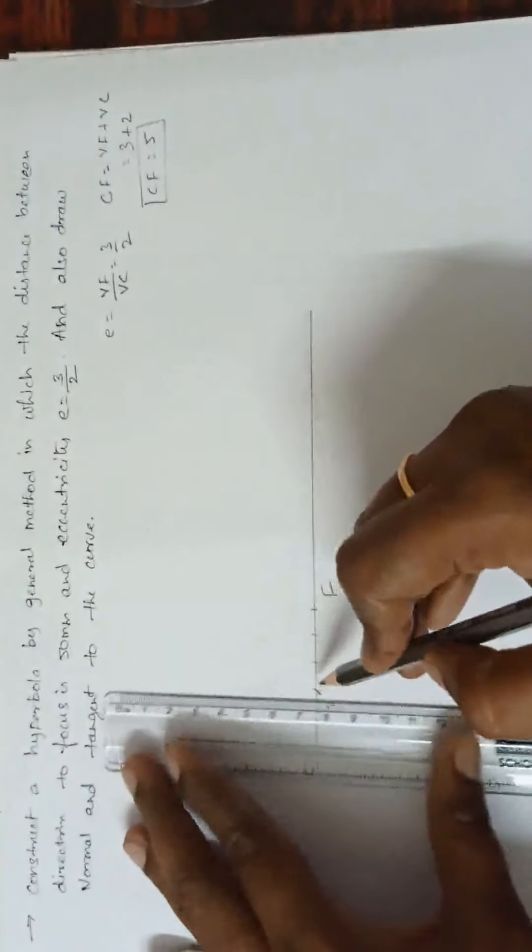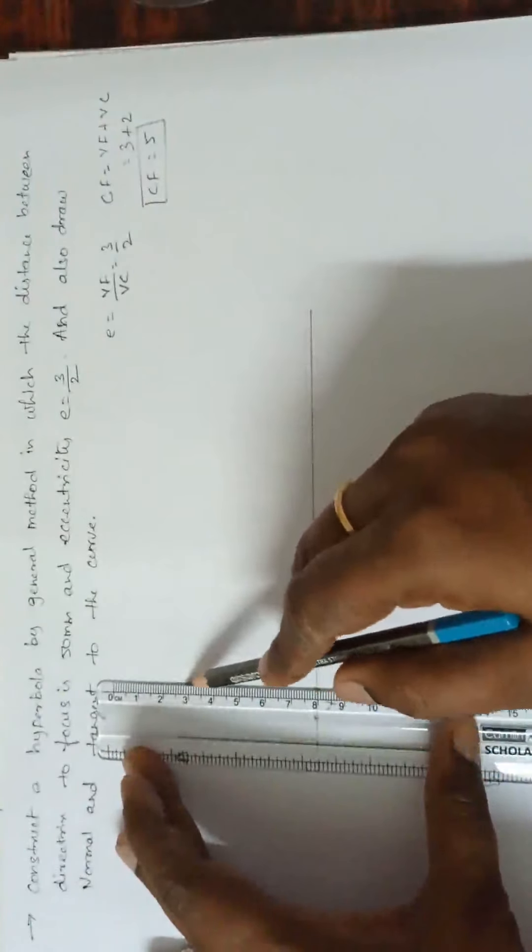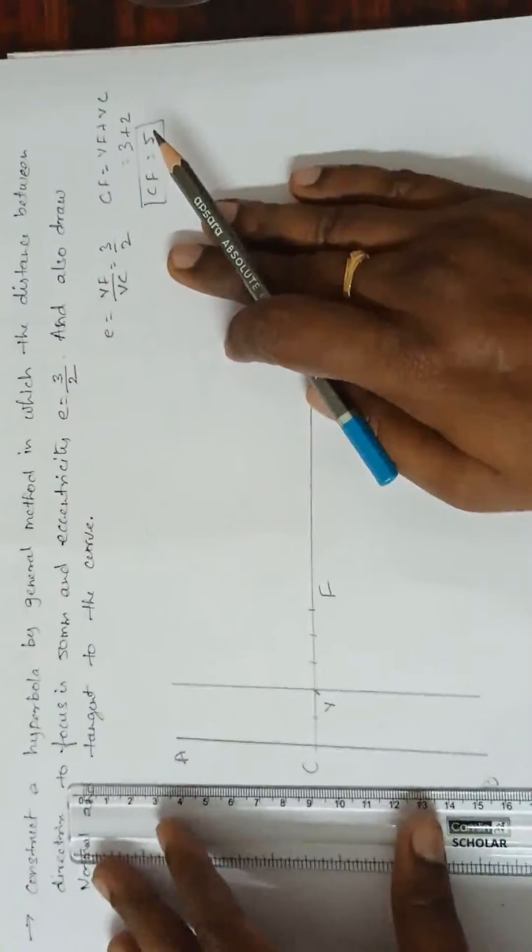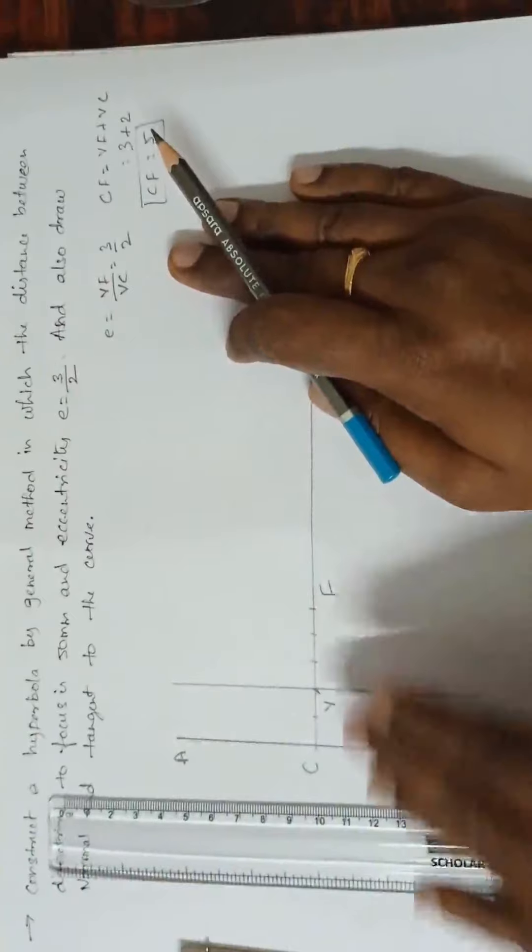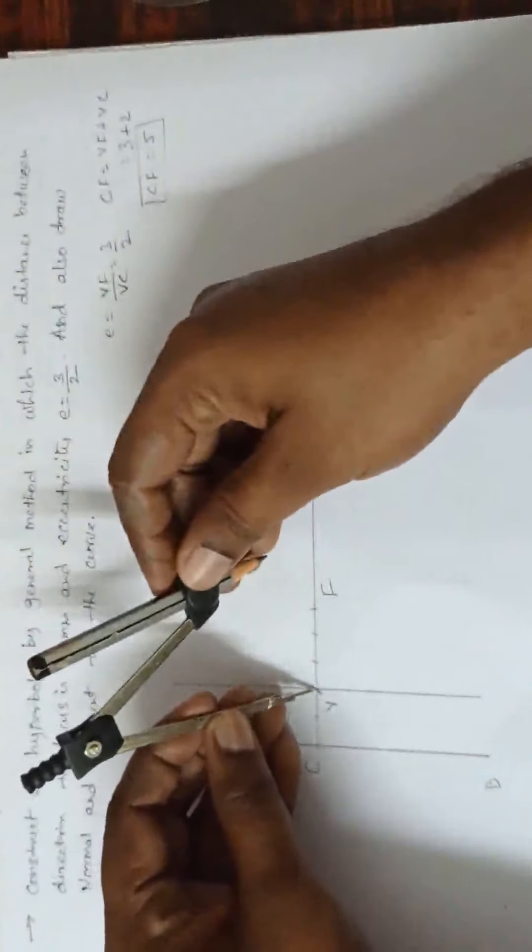So, what curve we will get? We will get is hyperbola. If the vertex is near to directrix, the curve will get is hyperbola. And here, everything is same as ellipse. What to do here? Take a radius VF.